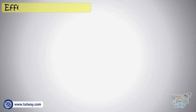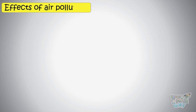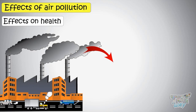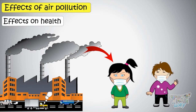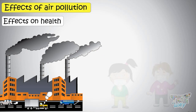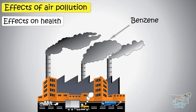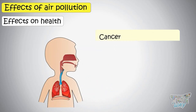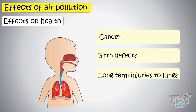Now let's see what are the major effects of air pollution, starting with the effects on health. Some of the pollutants in the air can be very harmful for the health of living beings. Chemicals like benzene or vinyl chloride in the air can cause diseases like cancer, birth defects, long-term injuries to lungs, and even death.